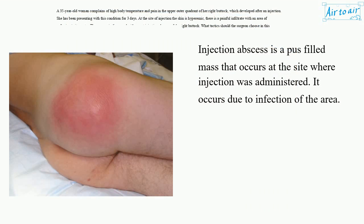Abscess. Injection abscess is a pus-filled mass that occurs at the site where an injection was administered. It occurs due to infection of the area.